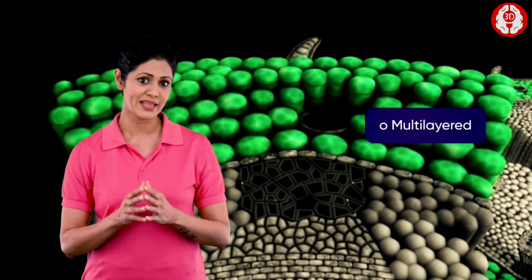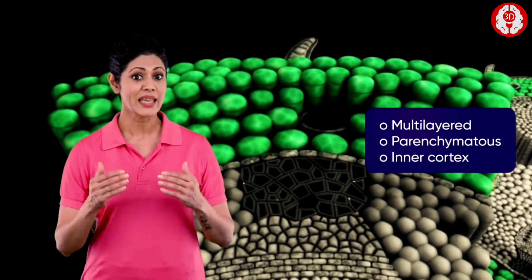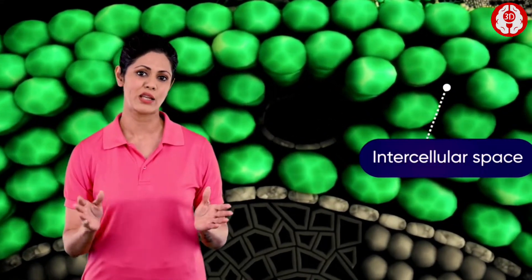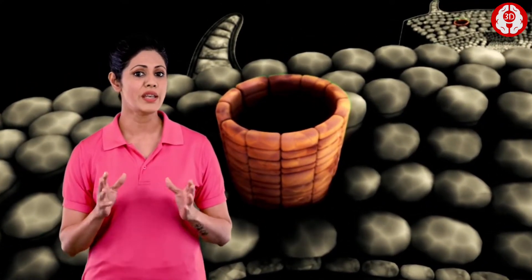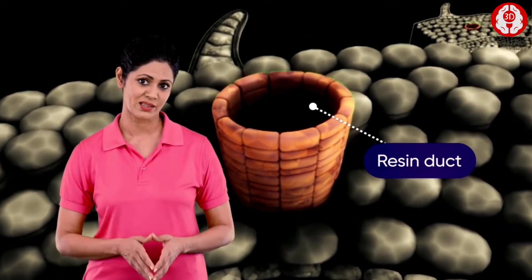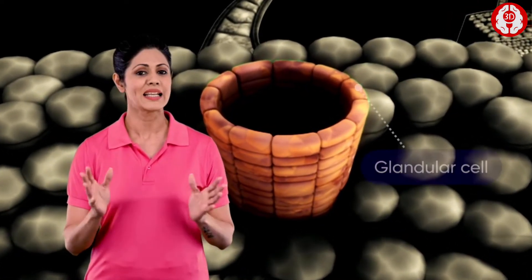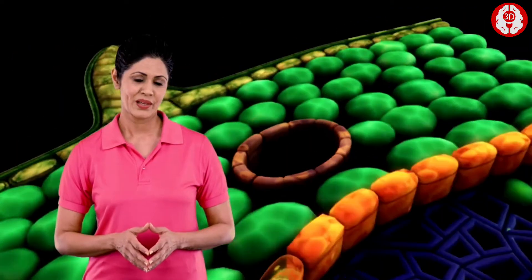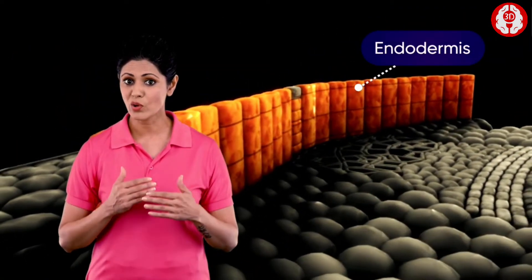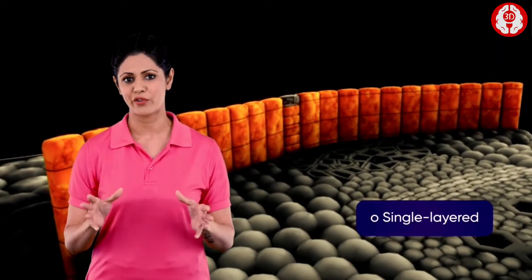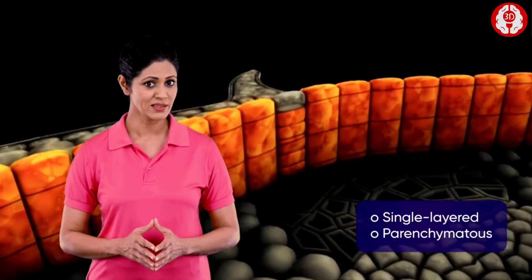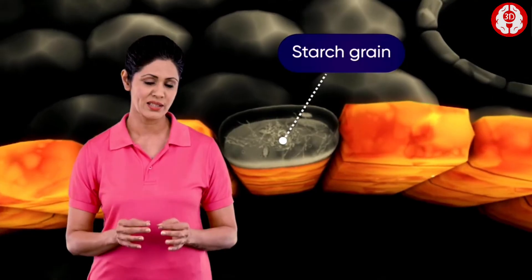A few layers of collenchymatous cells form the hypodermis — that is, the outer cortex — beneath the epidermis. The hypodermis is followed by a multi-layered parenchymatous inner cortex characterized by distinct intercellular spaces. The cortex shows the presence of a number of resin ducts, each of which is surrounded by small resin-secreting glandular cells. The endodermis is the innermost layer of the cortex.